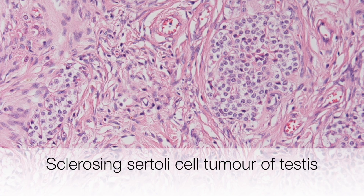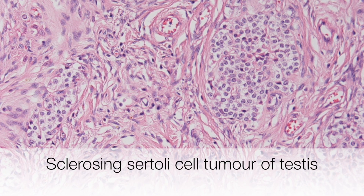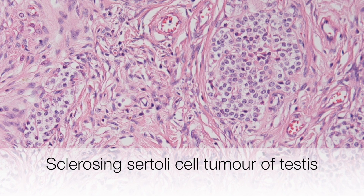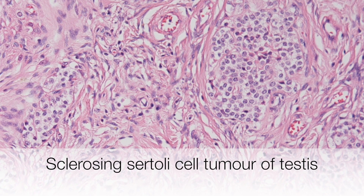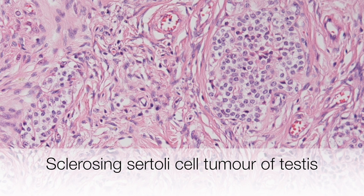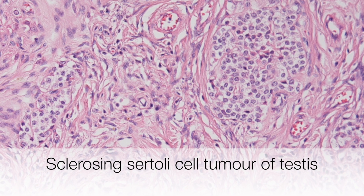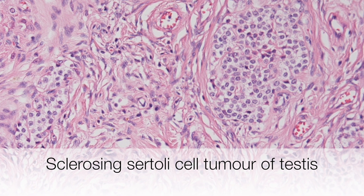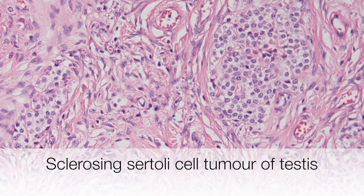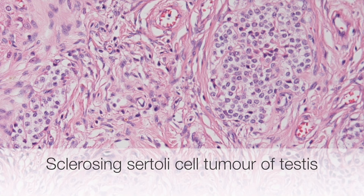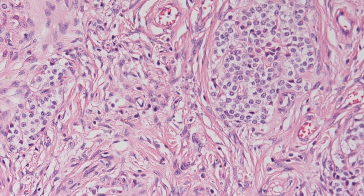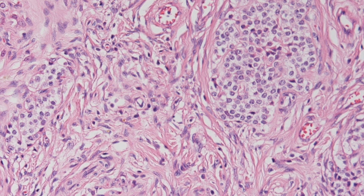This is an example of a rare tumor characterized by sclerosis: a sclerosing Sertoli cell tumor of the testis. This is a type of sex cord stromal tumor.